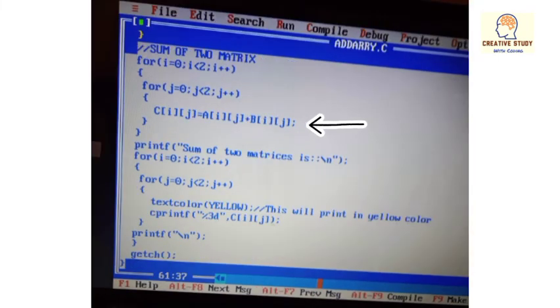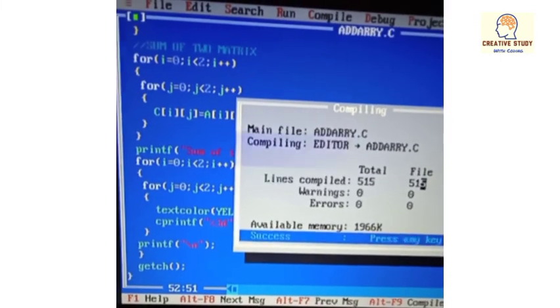And then here in this statement, I am adding matrix A and matrix B and getting the matrix C as a result. And by using these two statements, output will be shown in yellow color. That's it. So compile and run it to see the result.